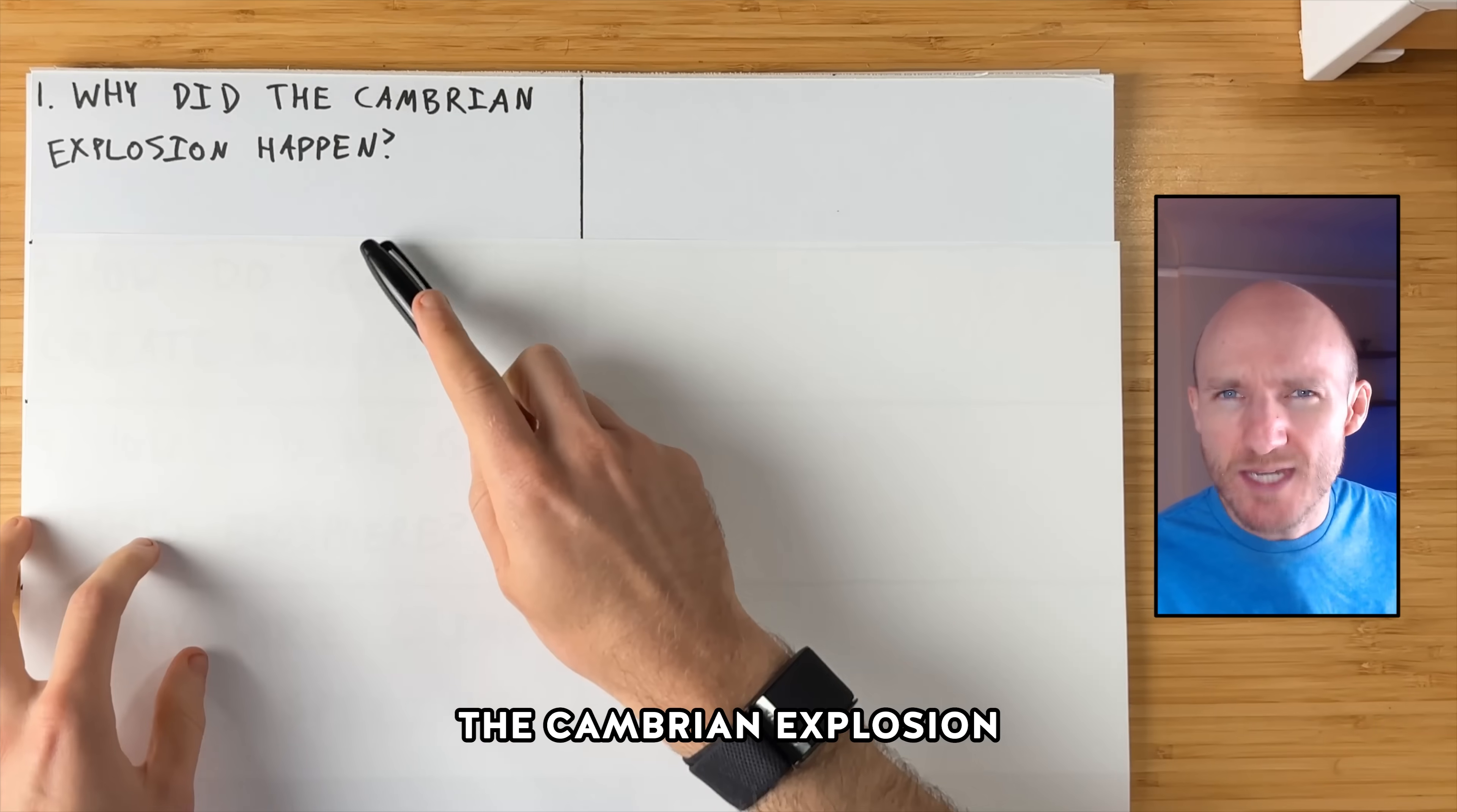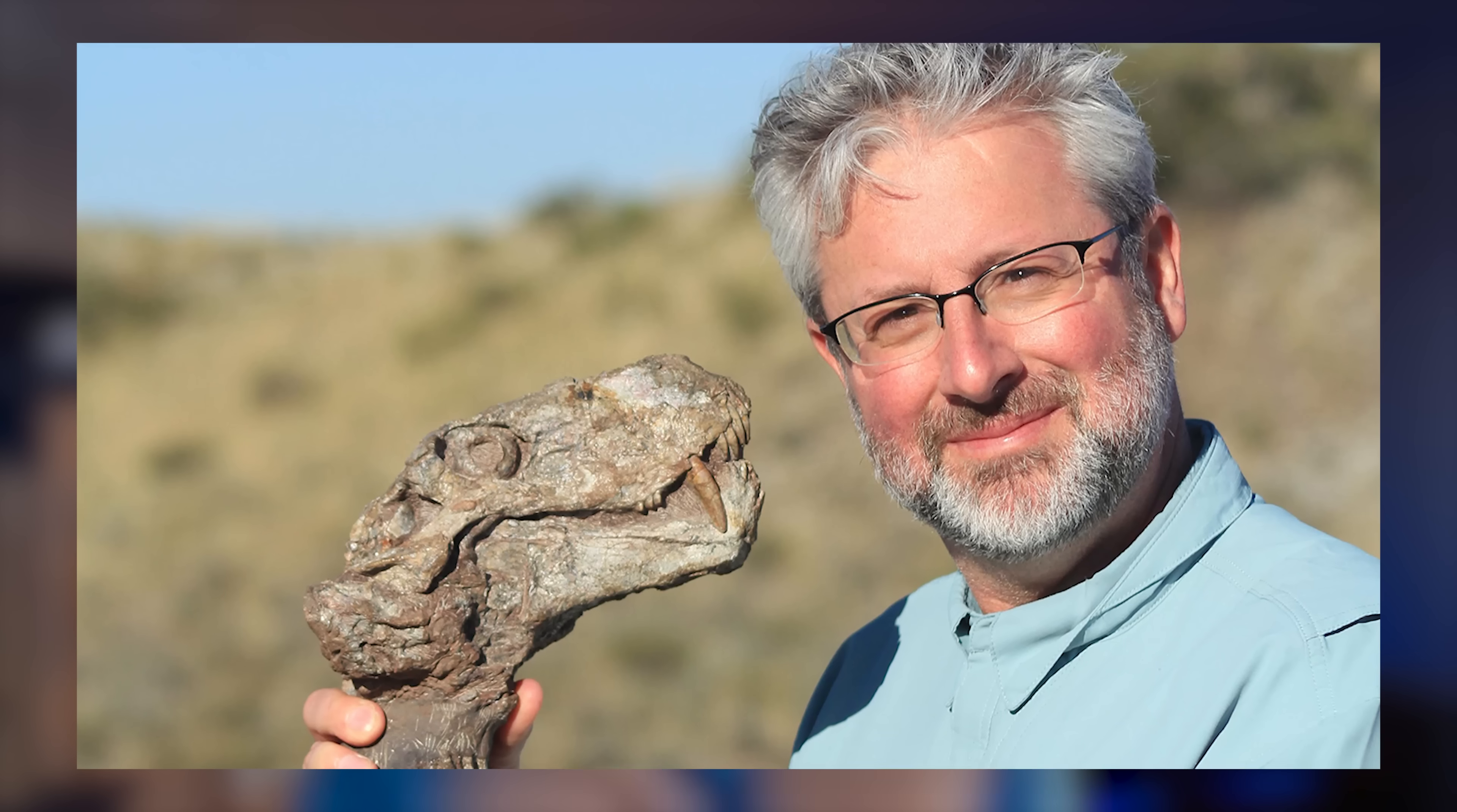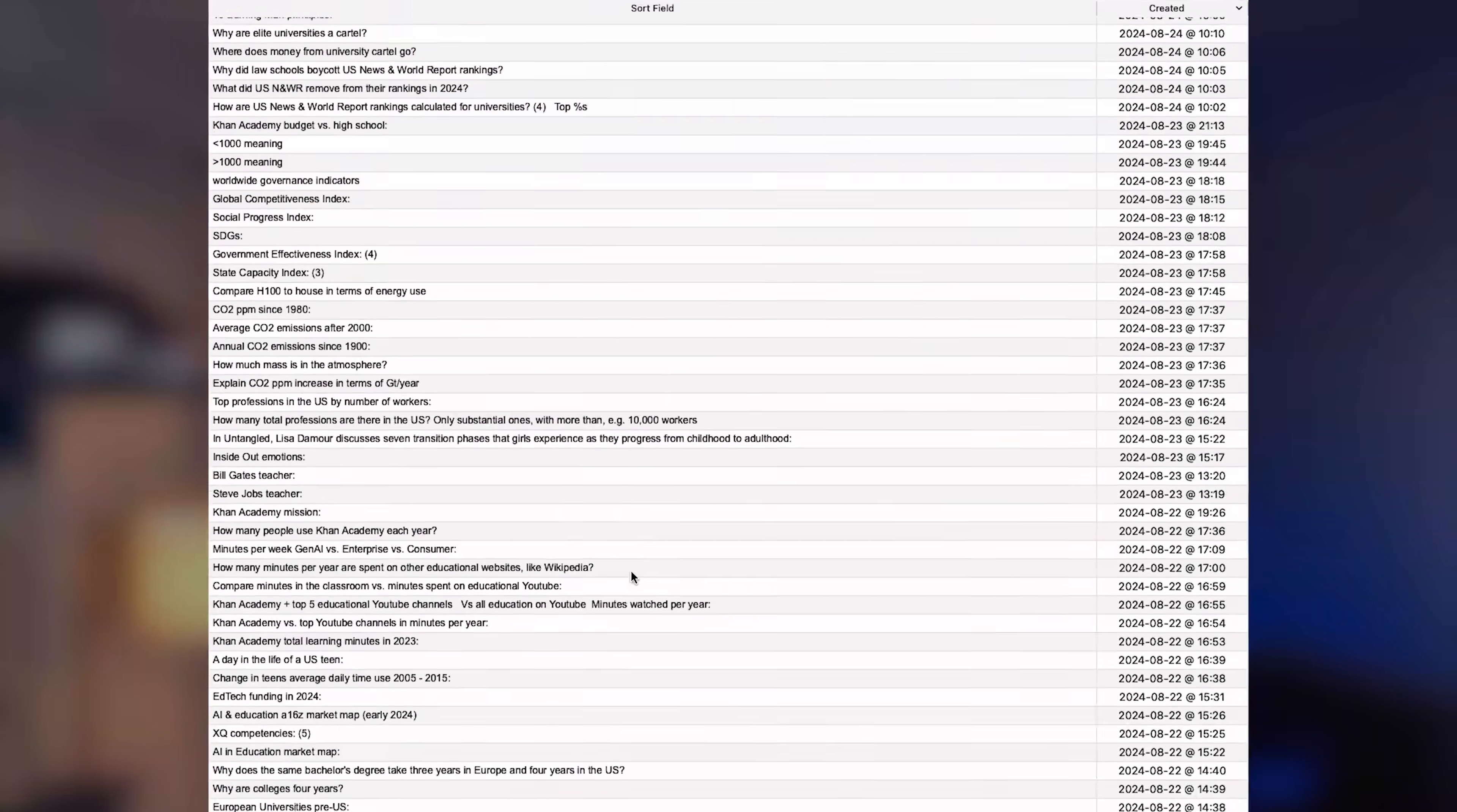The first puzzle is why did the Cambrian Explosion happen? If life was small for 3.5 billion years, why did it suddenly get big? And no, the answer is not just oxygen. And if you're new here, hi, I'm Reese. And I'm not just going to give you the simple but wrong explanation. I've spent dozens of hours on this. I've interviewed biologists and experts like Andy Knoll, Neil Shubin, Michael Levin. I've read a bunch of books on this, and I've even made 20,000 note cards to remember what I've learned with the goal of trying to give you a real answer on how everything evolved. So let's dive in.